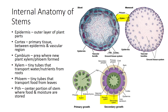The xylem is composed of tiny tubes that transport water and nutrients up from the roots to other parts of the plant. The annual rings in a tree are made up of xylem. The phloem is composed of tiny tubes that transport manufactured food and carbohydrates from the leaves down to other parts of the plant, such as the roots and shoots. The pith is located in the center portion of the stem where food and moisture are stored.